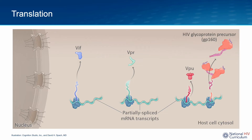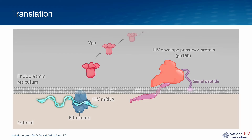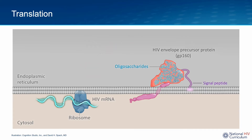The partially spliced mRNA also encodes the HIV envelope precursor protein GP160. This process occurs along the host cell endoplasmic reticulum, with the newly forming protein secreted into the lumen of the endoplasmic reticulum. Once translation of the VPU-envelope mRNA is complete, VPU is released, but the HIV envelope precursor protein GP160 remains attached to the endoplasmic reticulum membrane via the signal peptide at its N-terminal end. During translation, the outer component is coated with multiple oligosaccharide side chains, generating a glycan shield around the envelope.